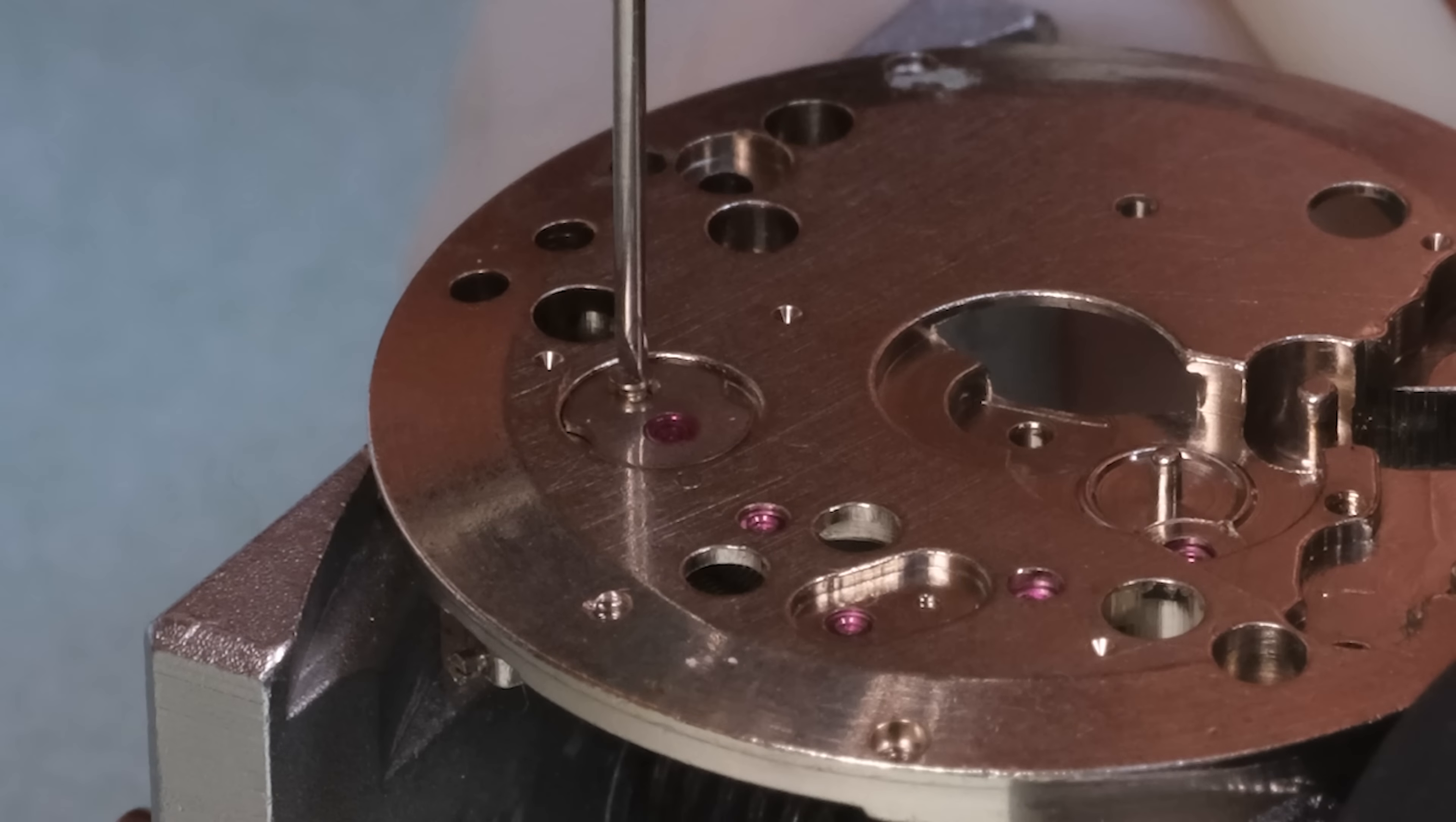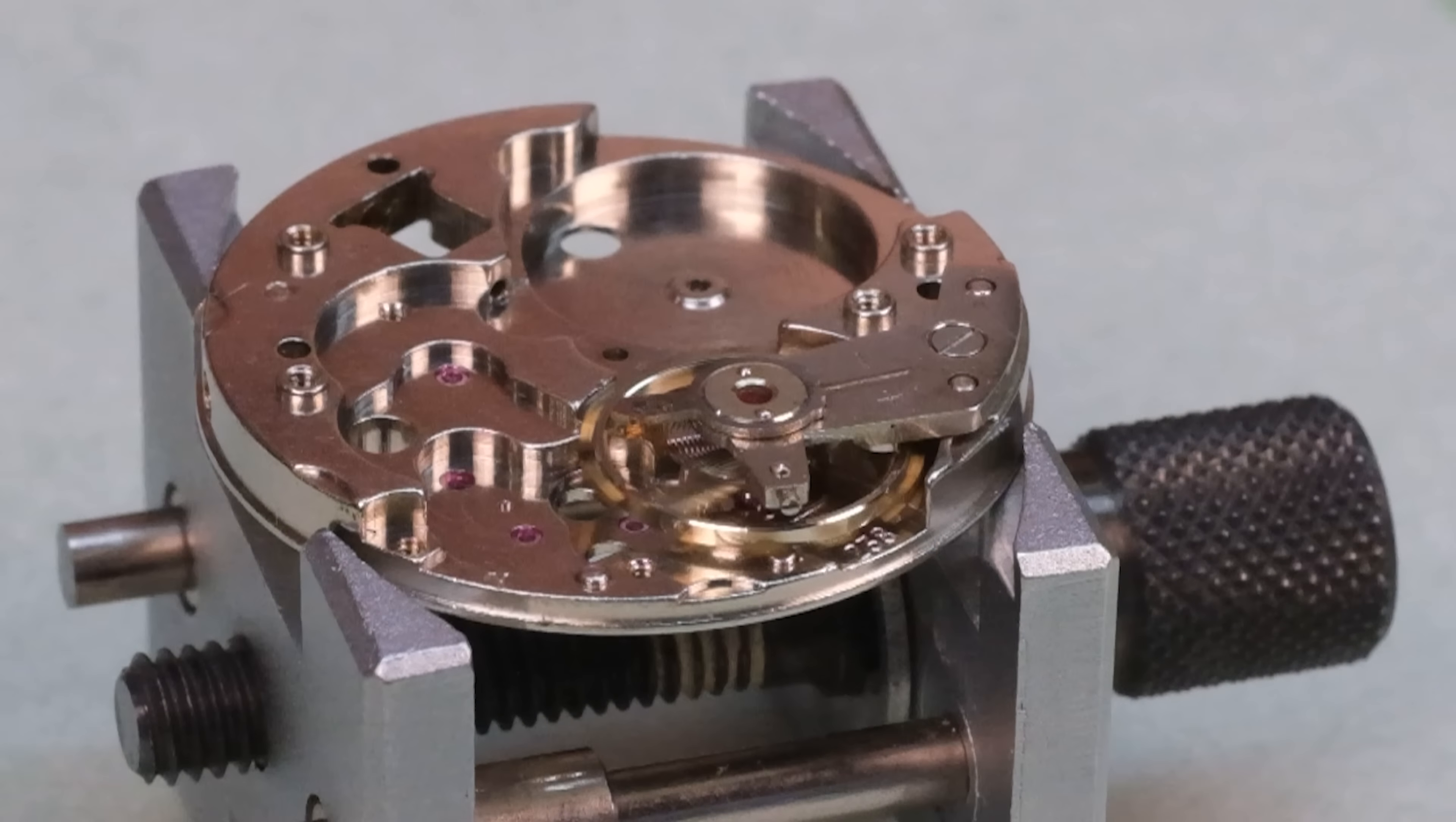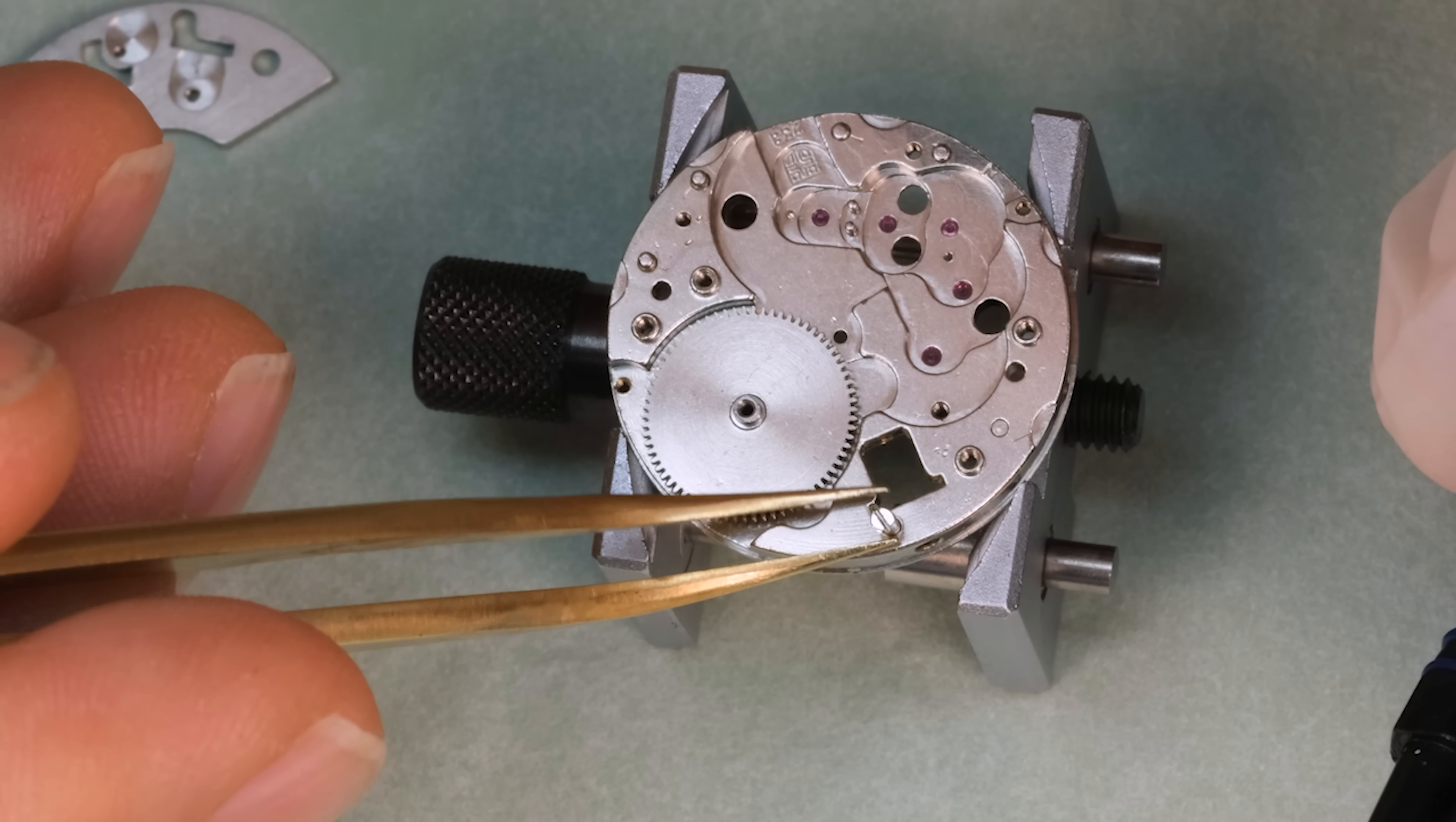All right, let's see if the balance oscillates freely. Yeah, that looks all right so we can proceed with building the movement. There are many ways to skin a cat, fish, but I'm going to start with putting in the power source, so the mainspring in the barrel.